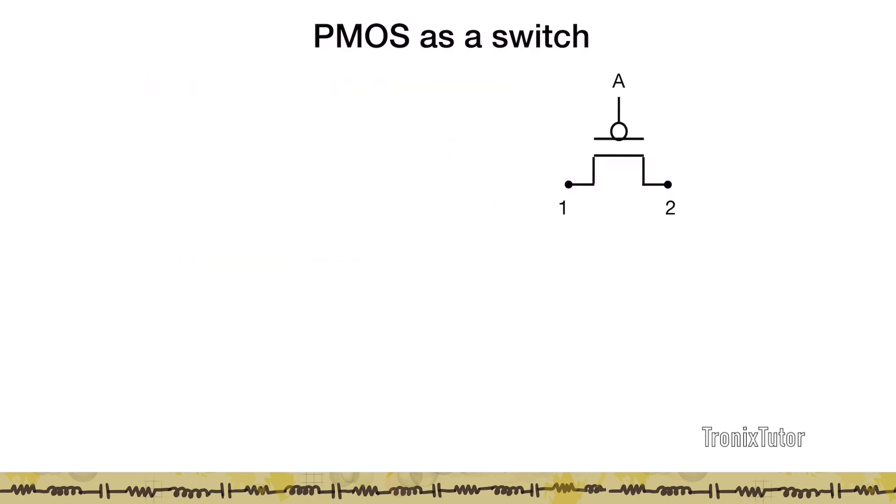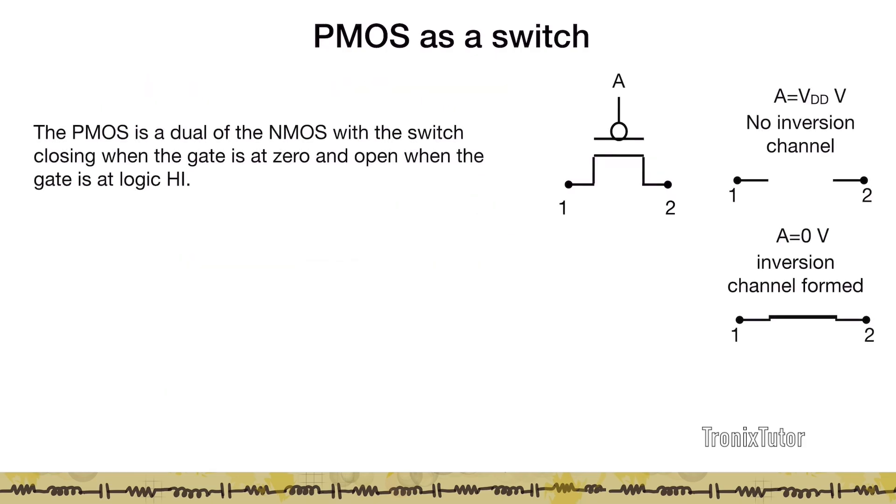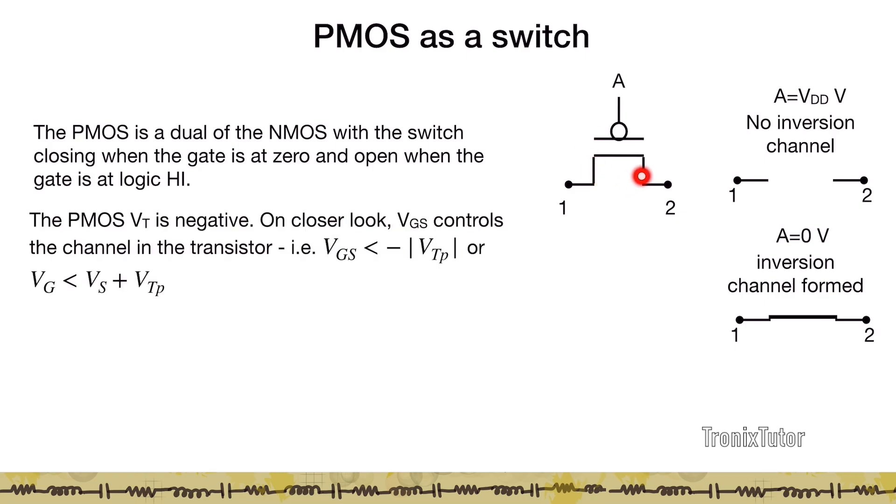Now let's look at the PMOS as a switch. Here the PMOS has a bubbled gate at the input. Here one to two is controlled by what's happening at node A. And because the PMOS has the bubble, this is going to work complementary to the nMOS, which means that when A is equal to VDD, one and two are open circuited. And when A goes to zero, I form an inversion channel because the VGS here becomes minus VDD, which is less than minus VTP, leading to an inversion channel here. Remember that PMOS VT is negative.